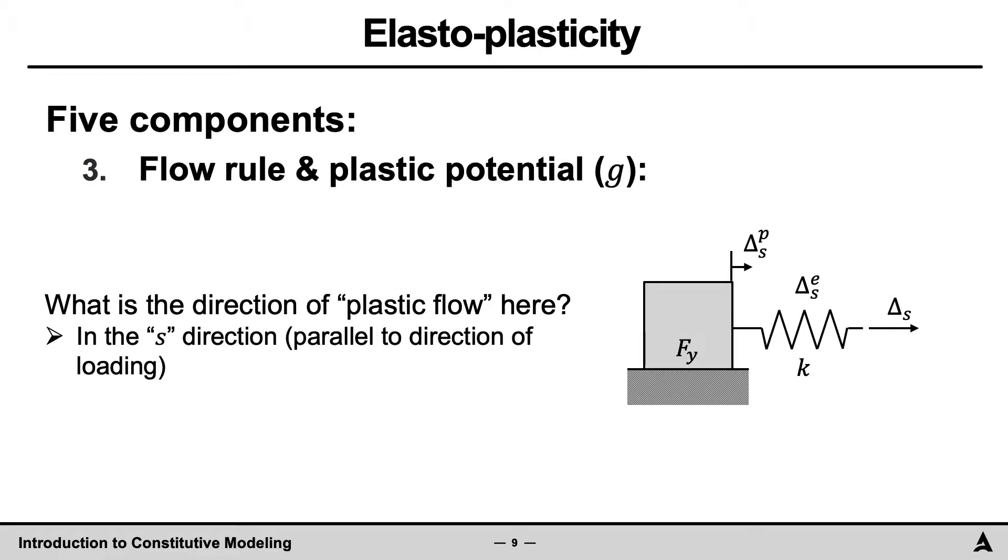In the third item, we desire to determine for the yielding block the direction of plastic displacement, an analogy for plastic strains. With this in mind, we discussed two key concepts, the flow rule and the plastic potential, g. In essence, the goal here is to determine, and mathematically define, the direction of plastic flow. For this block, the answer is trivial. Permanent plastic displacement is parallel to the direction of loading. This direction will be defined here as s, shear direction. To better highlight this direction, the subscript s has been added as a subscript to the elastic, plastic, and total displacements.